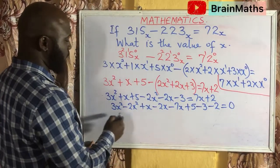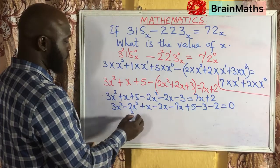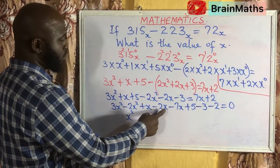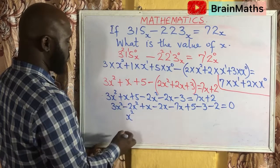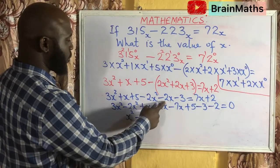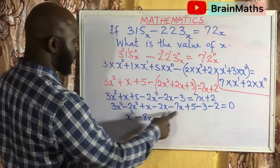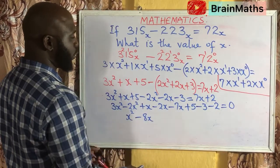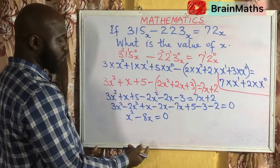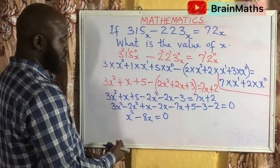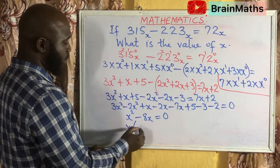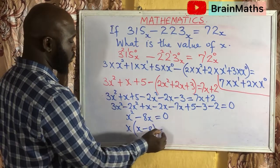Solving this, we have X squared plus X minus 2X giving minus 1X, minus 7X, giving us minus 8X in total. And 5 minus 3 gives 2, and 2 minus 2 gives 0. So we are left with X squared minus 8X equals 0. We factor: X times X minus 8 equals 0.